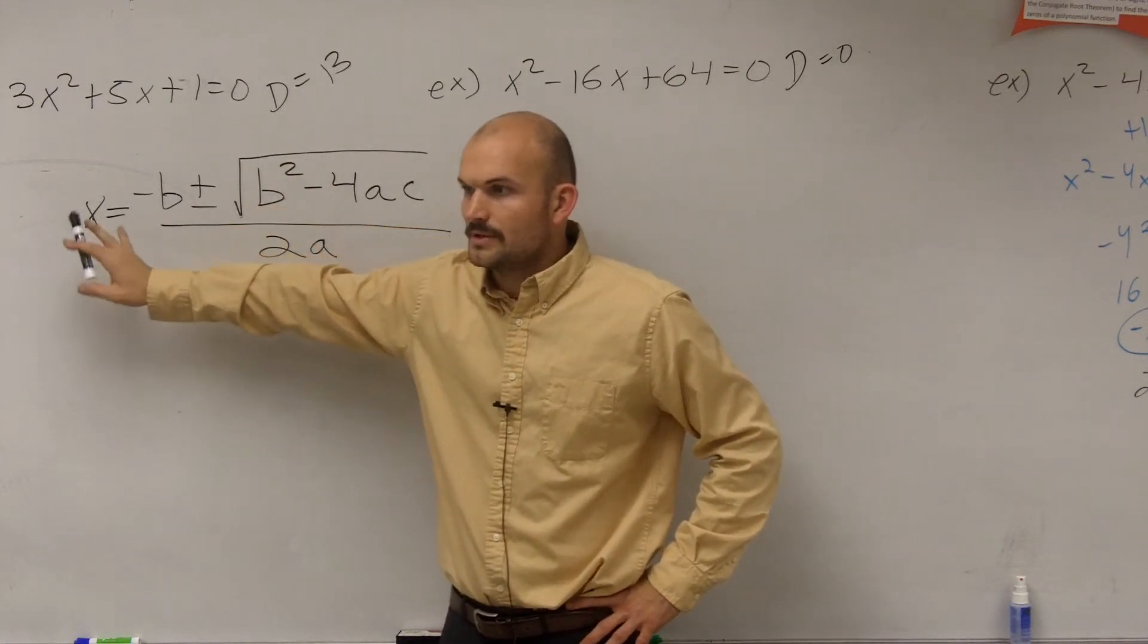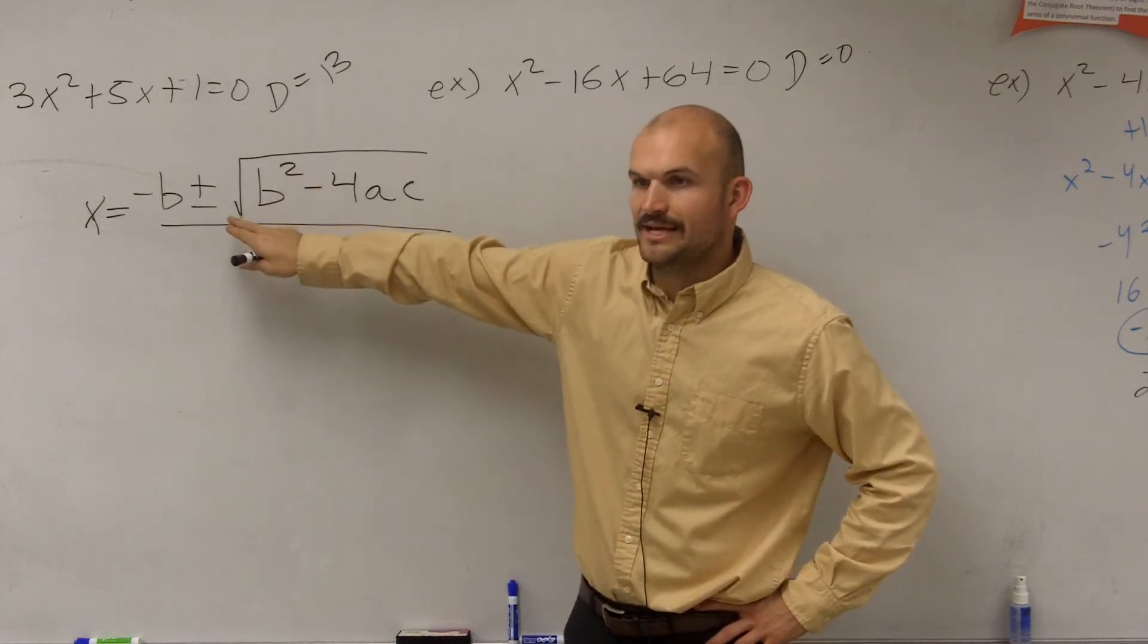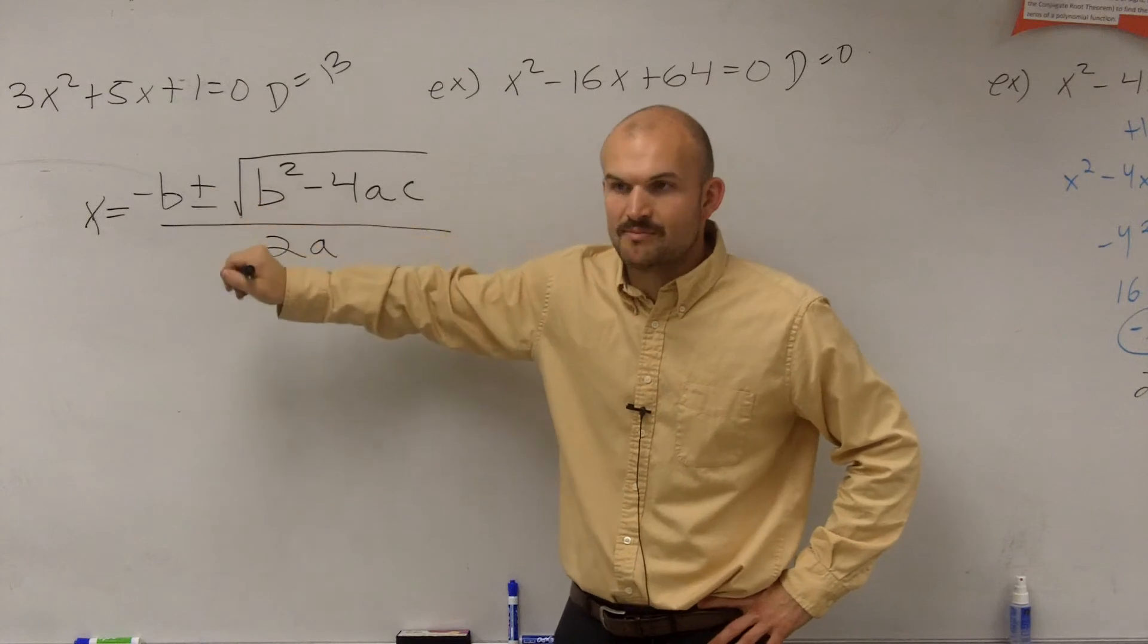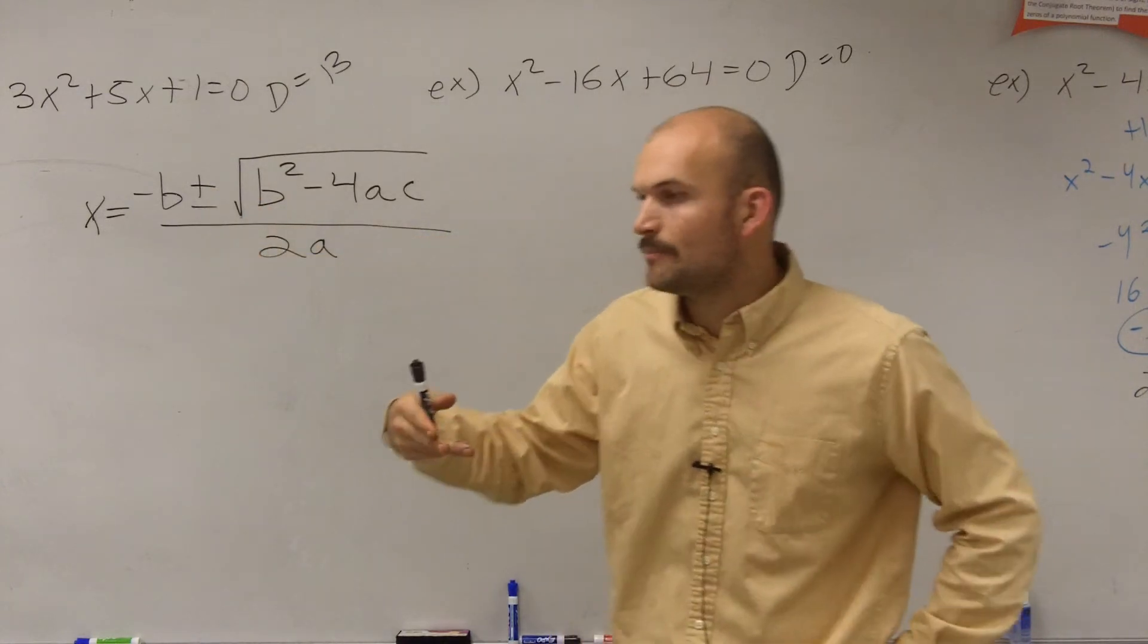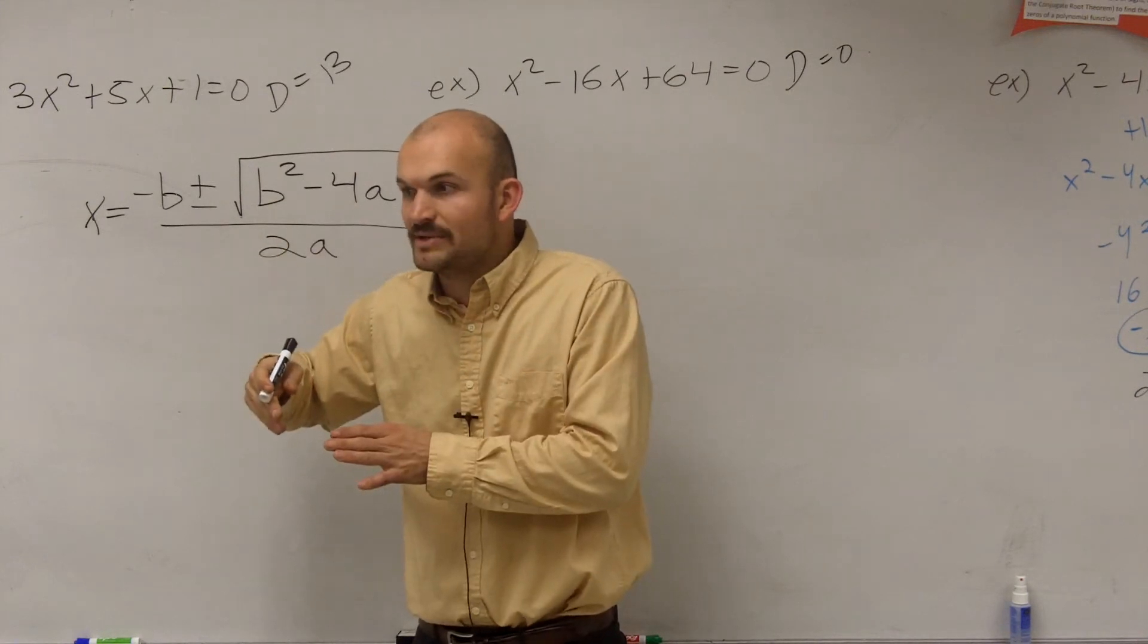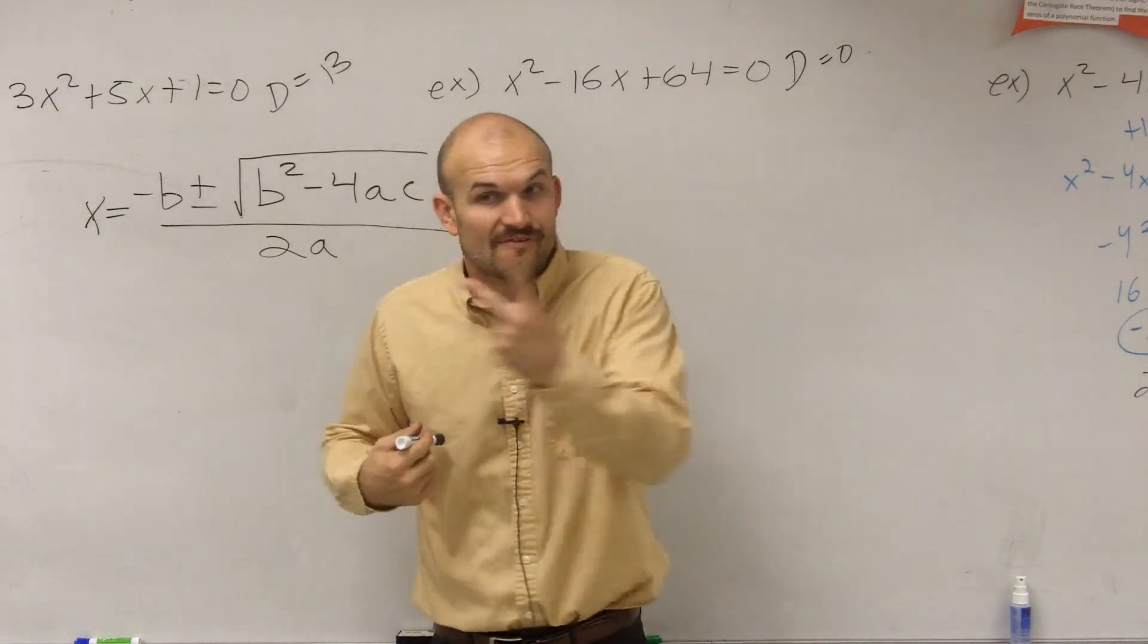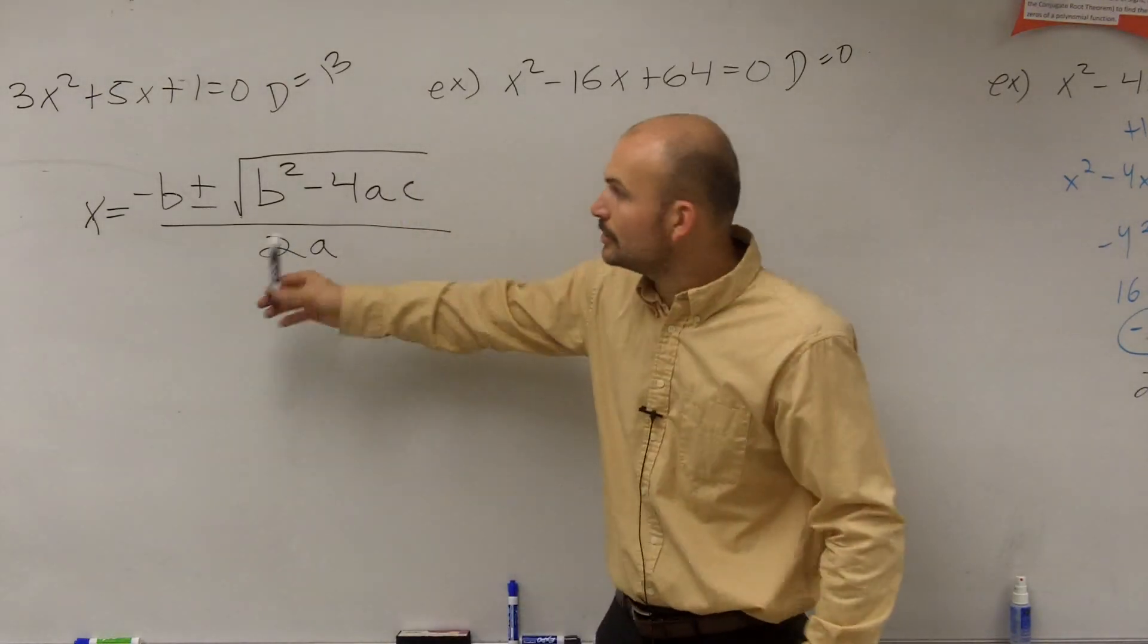So one thing I wanted to look at, though, notice that the square root is always plus or minus. If you remember, when we were solving by completing the square, right? We had to square root both sides. And what did we do? We took the square root plus or minus, right? And that gave us two values.